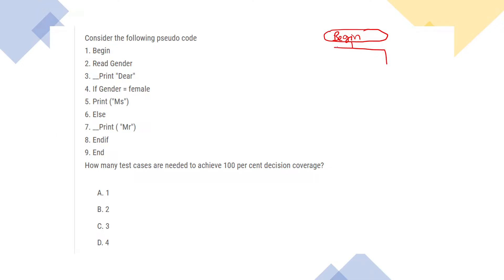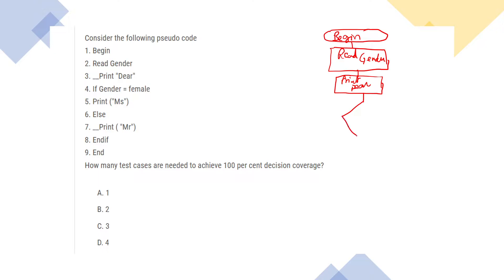Begin: read gender. Draw a decision box — if gender equals female.